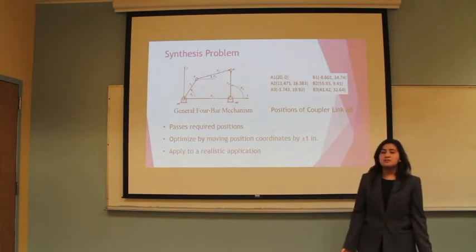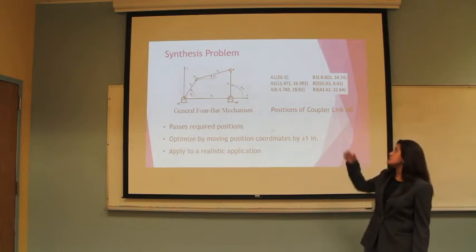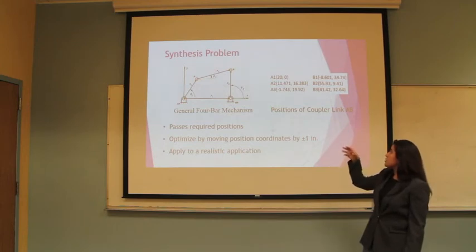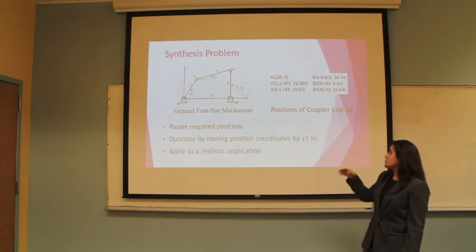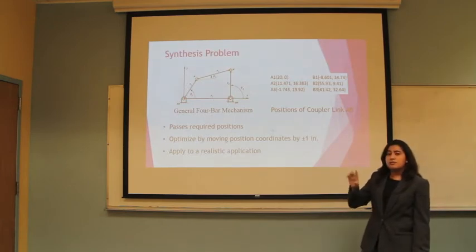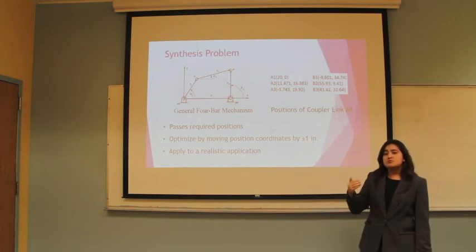For the second part of our project, we were supposed to synthesize a four bar mechanism given the coordinates for three different positions as depicted here. The coordinates were for our coupler link AB and we had to make sure that they all passed through the required positions in the right order. We were allowed to optimize these coordinates by changing one coordinate by one or minus one inch. After we were done, we would need to apply this to a realistic application.